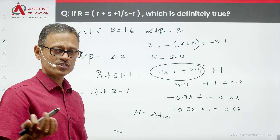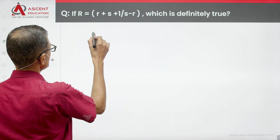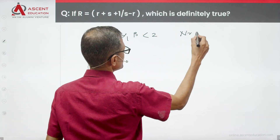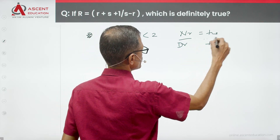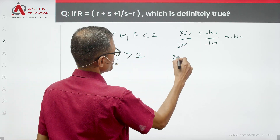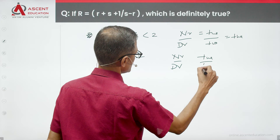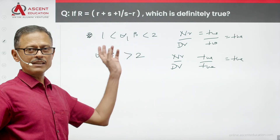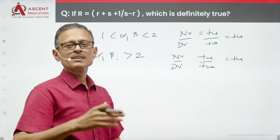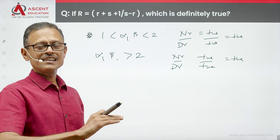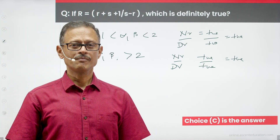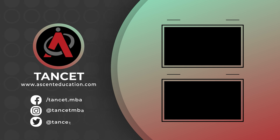When alpha and beta are greater than 2, the magnitude of s is greater than the magnitude of r, so numerator is positive. In all scenarios — roots between 1 and 2, equal to 2, or greater than 2 — the numerator is positive and the denominator is positive. Therefore the expression is always positive: R greater than 0. Choice C is the correct answer.